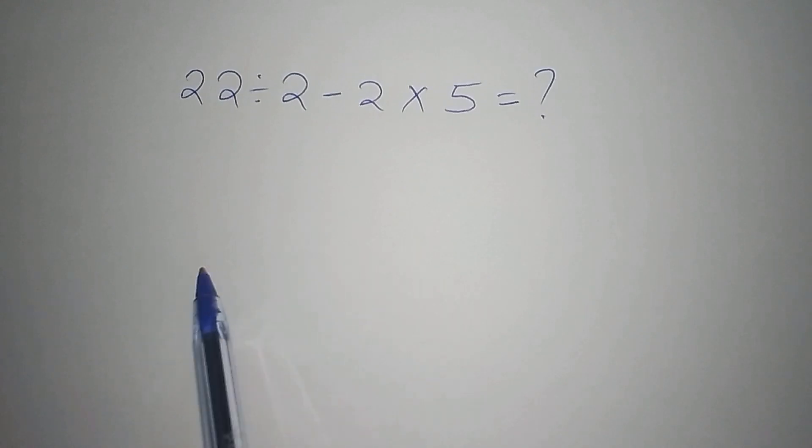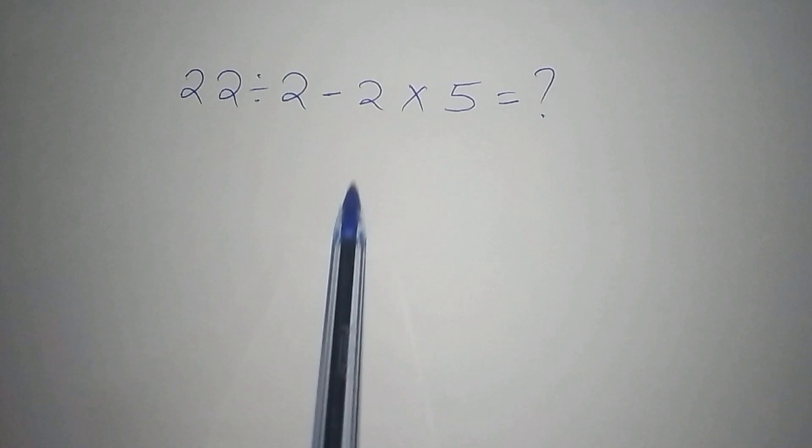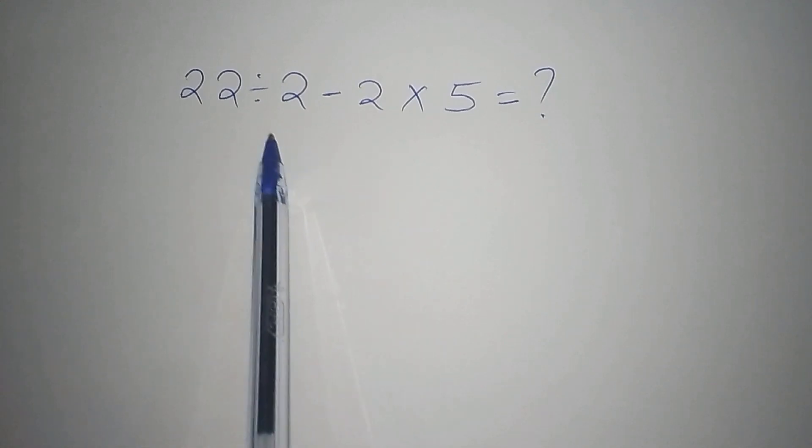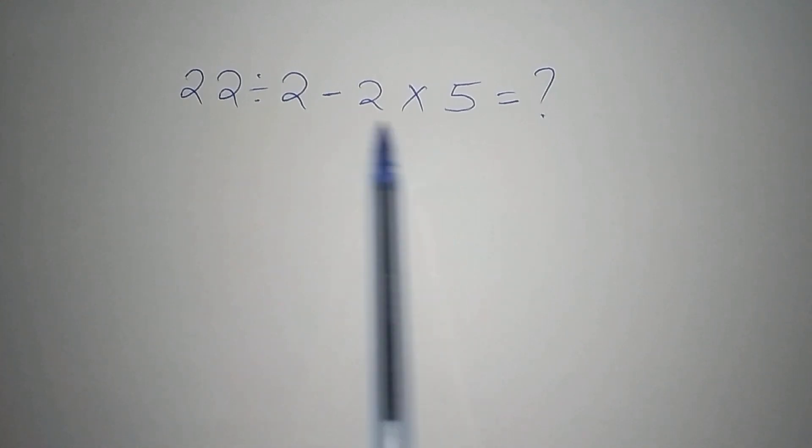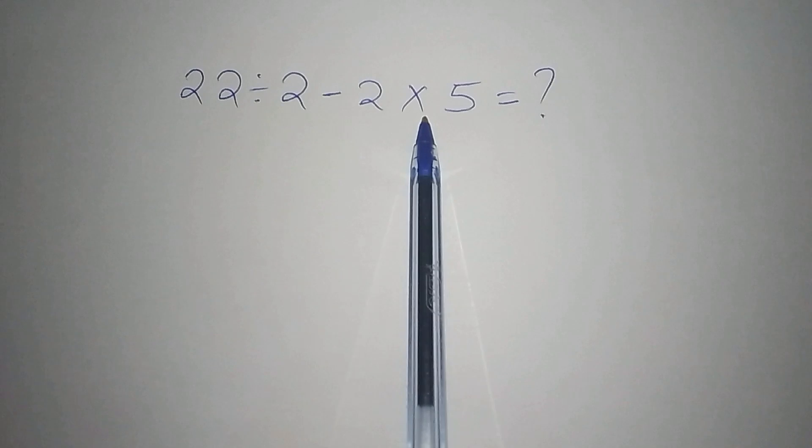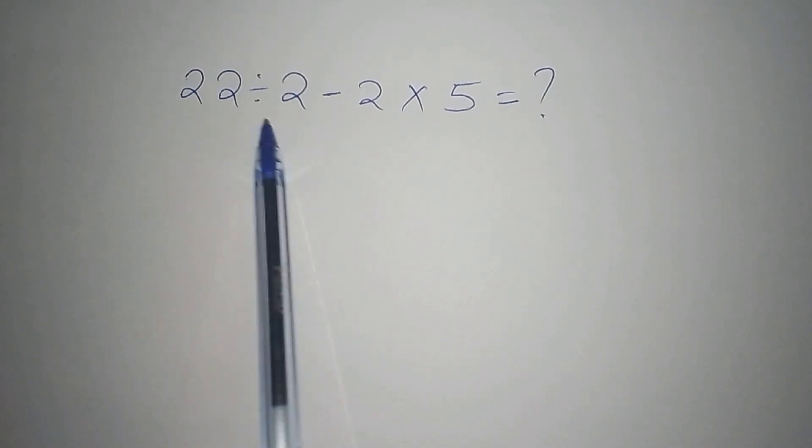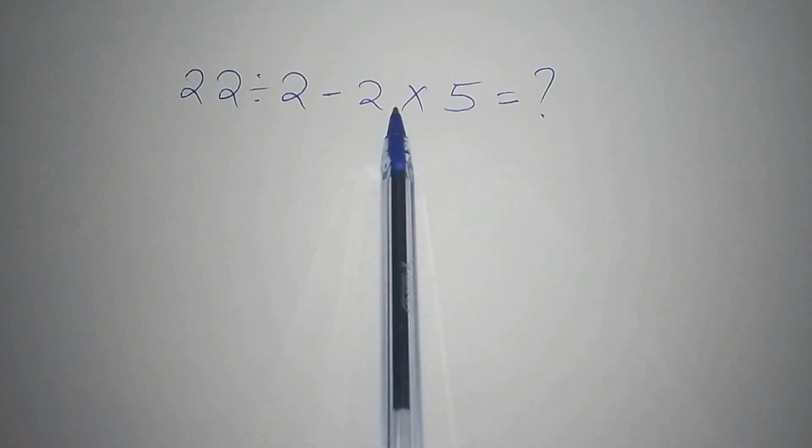Hello everyone, a lot of people have been asking me how do we go about this math problem. Now come with me, I want to show you how we go about this. Remember that this math operation involves several operations like division, subtraction, and multiplication. So we have 22 divided by 2 minus 2 times 5.